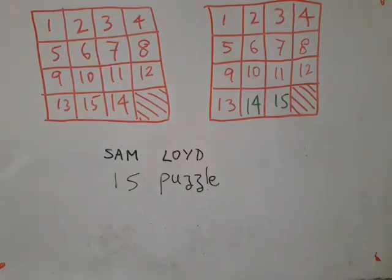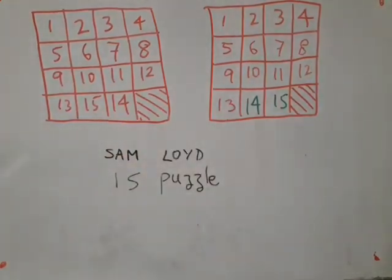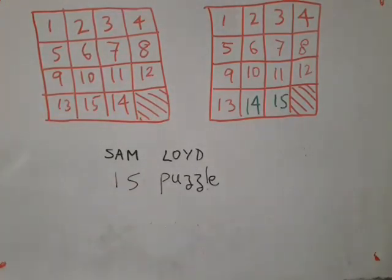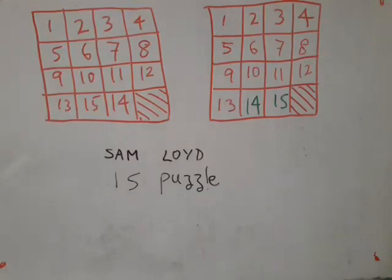Only later did some mathematicians figure out that this puzzle actually cannot be solved. I can leave it as a challenge for you to figure out how the same idea of dividing by a number and taking the remainder applies here to show that this puzzle is not solvable. Even with this hint, you will find it difficult to come up with a proof of its impossibility.